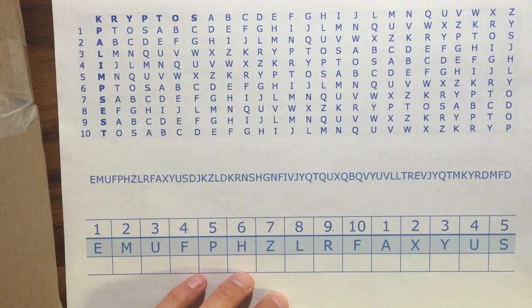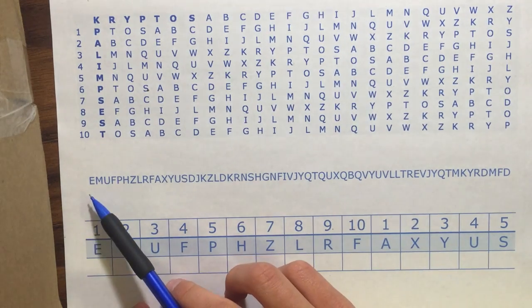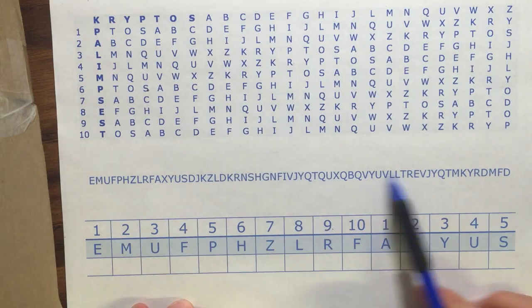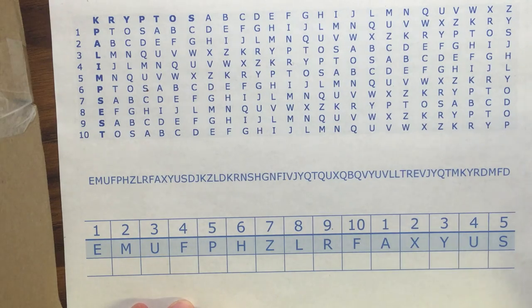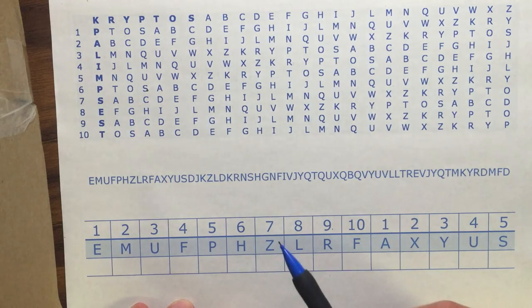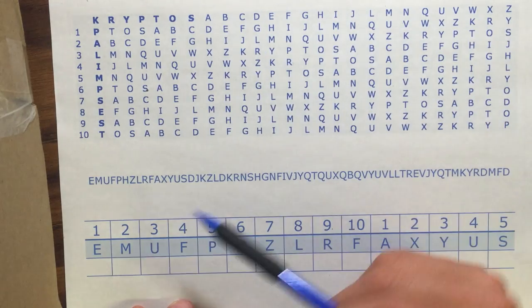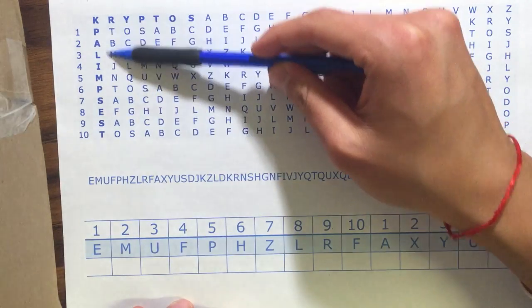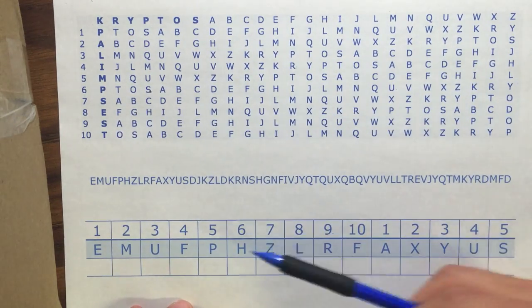In this video I'll be solving the first message of the puzzle Cryptos. Here we have the encrypted message displayed. It is precisely 63 characters long and the cipher that Sanborn used is called Vigenère and uses two keywords which in this case are palimpsest and cryptos. So the first steps to decrypt this message...